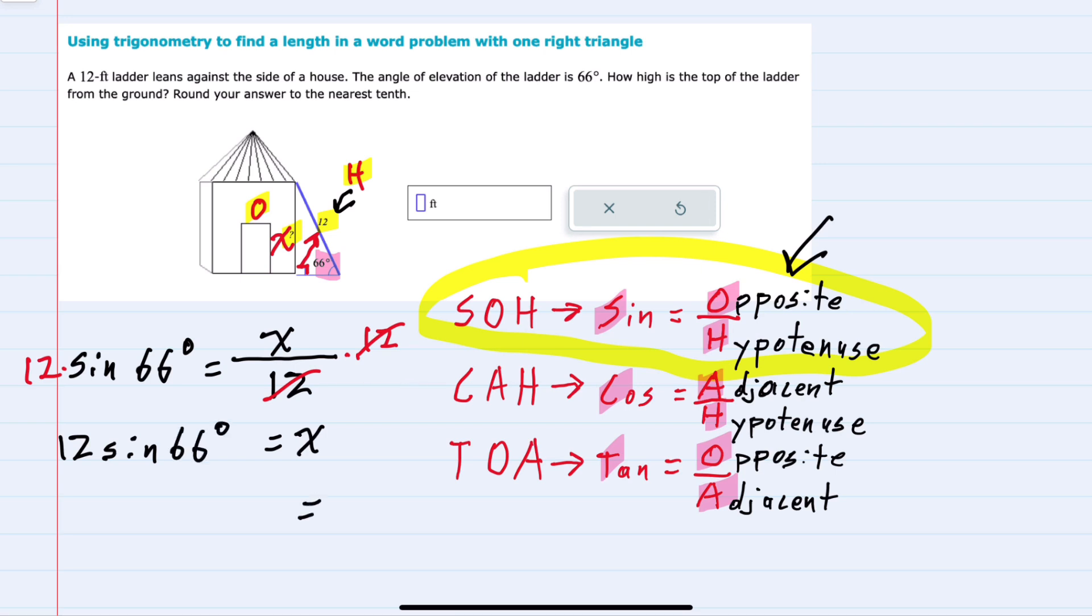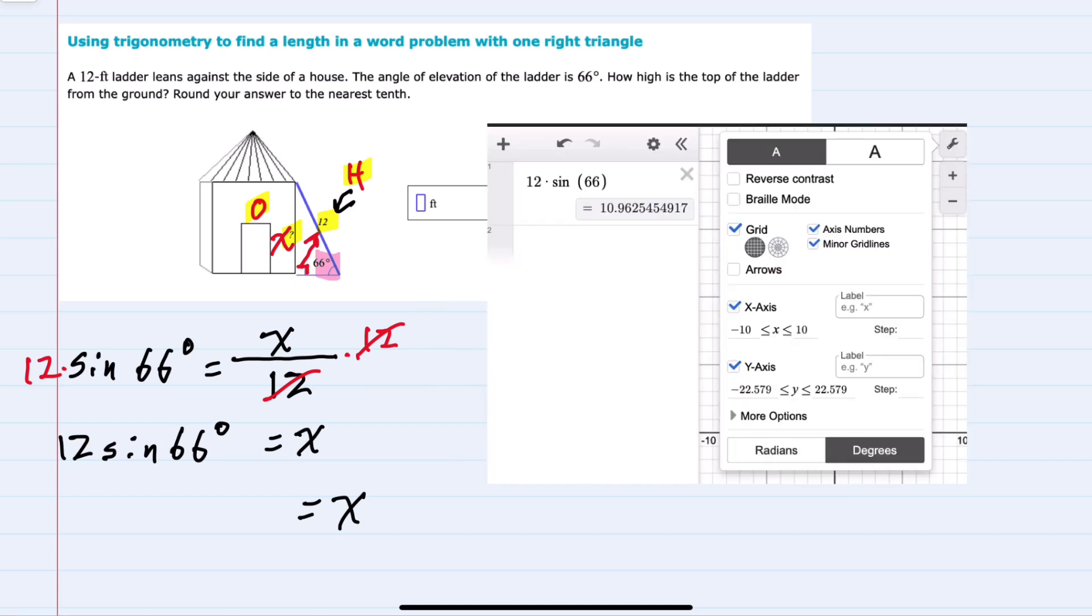From here we can just use a calculator. Here I use Desmos, putting in the calculation that I would like for it to make. And double checking the settings to make sure that I am in fact in degrees, since I'm taking the sine of 66 degrees. It gives me this decimal equivalence.